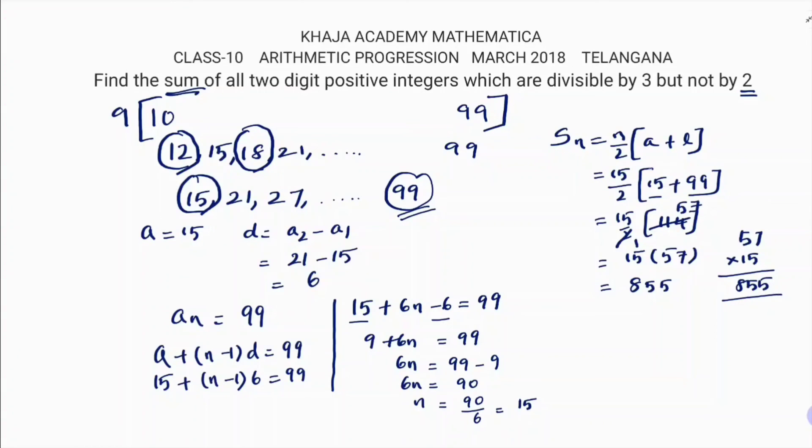And you can use the first formula also if you want. This is the answer. But if you want, you can use Sₙ equals n/2 into 2a plus (n-1)d. Because n is 15, a is also 15, and d is 6, and total 15 terms. In that case also you will get the same answer. So sum of 15 terms is 855.